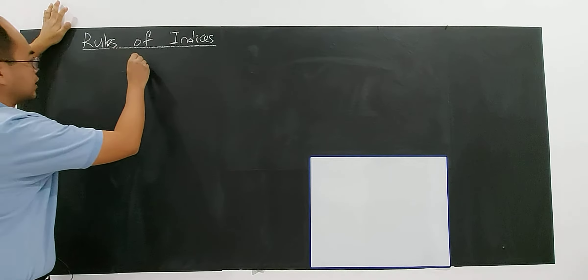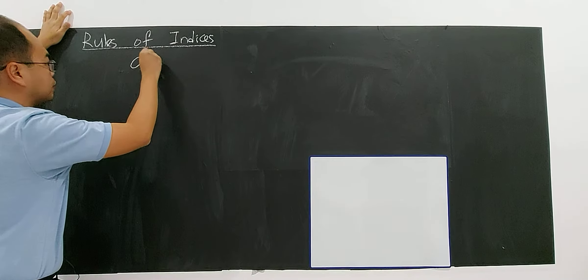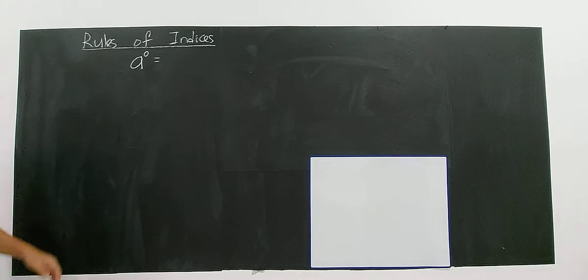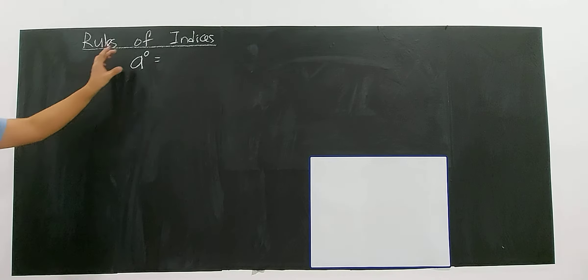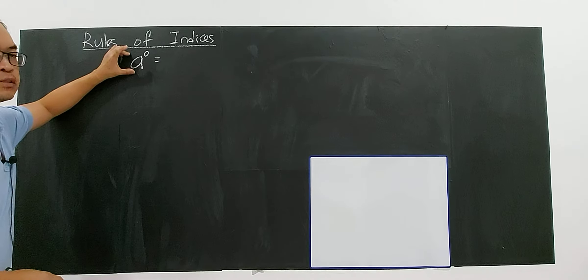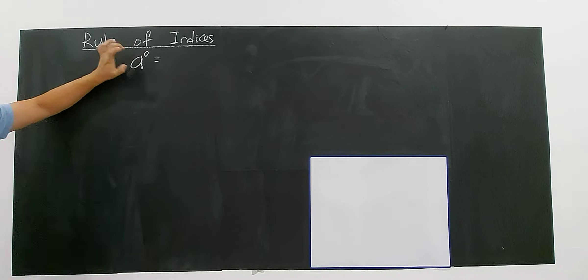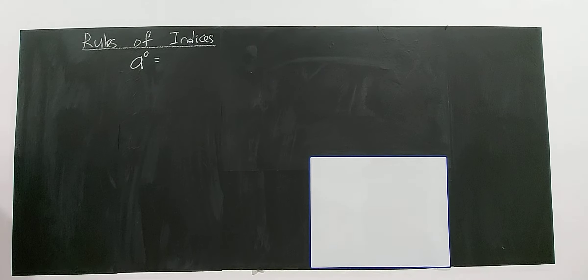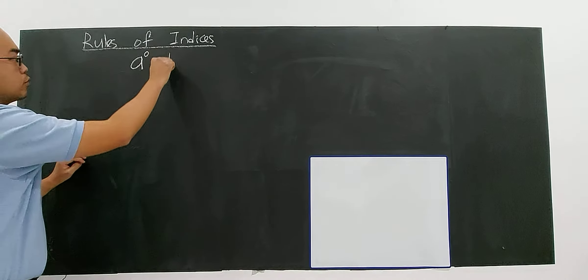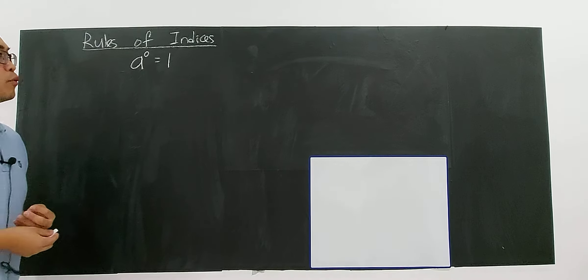The first rule is you must understand A to the power of zero. Any constant — any number to the power of zero, except zero itself — will give you 1. You will get 1.